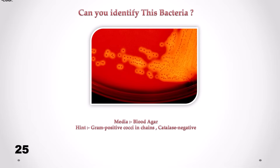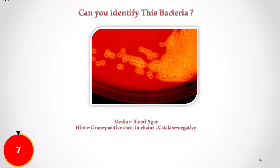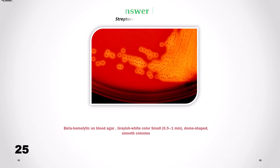Can you identify this bacteria? Correct answer is Streptococcus pyogenes. We can see beta-hemolytic, grayish to white color, small dome-shaped smooth colonies.